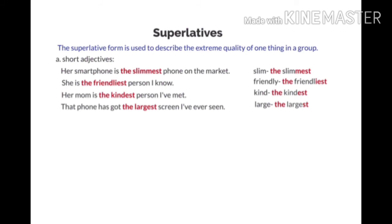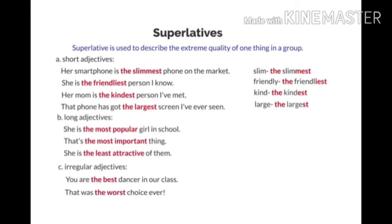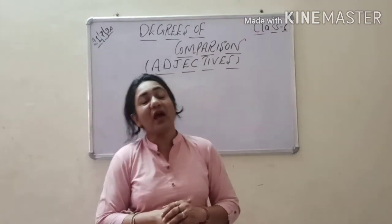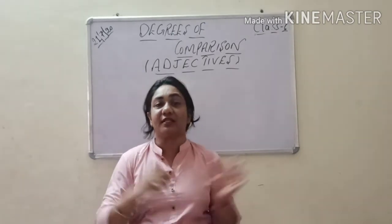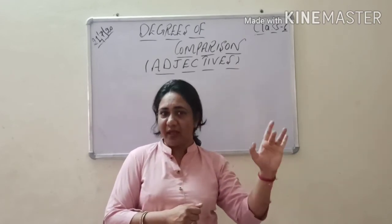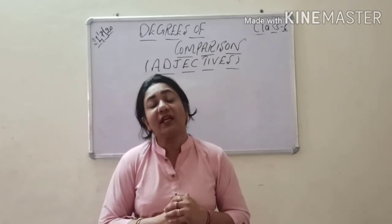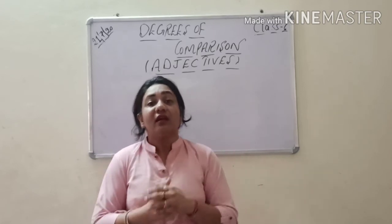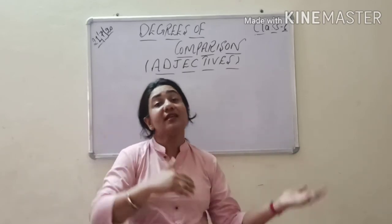Superlatives: the superlative form is used to describe the extreme quality of one thing in a group. Her smartphone is the slimmest phone on the market. She is the friendliest person I know. Her mom is the kindest person I've met. That phone has got the largest screen I've ever seen. She is the most popular girl in school. That's the most important thing. She is the least attractive of them. You are the best dancer in our class. That was the worst choice ever. So I hope you now understand where to use comparative degree and how to use superlative degree, and you know the difference between the two. Today we learned the three types of degrees: positive, comparative, and superlative. With subordinating conjunctions like 'than' and 'as' — as in 'as tall as', 'as short as', 'as big as'.